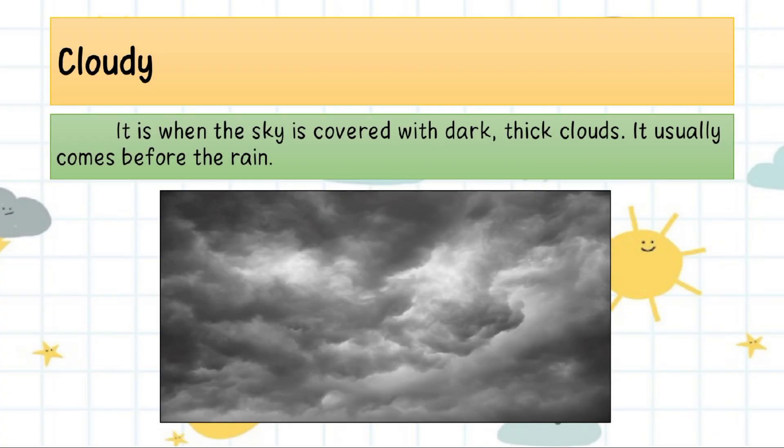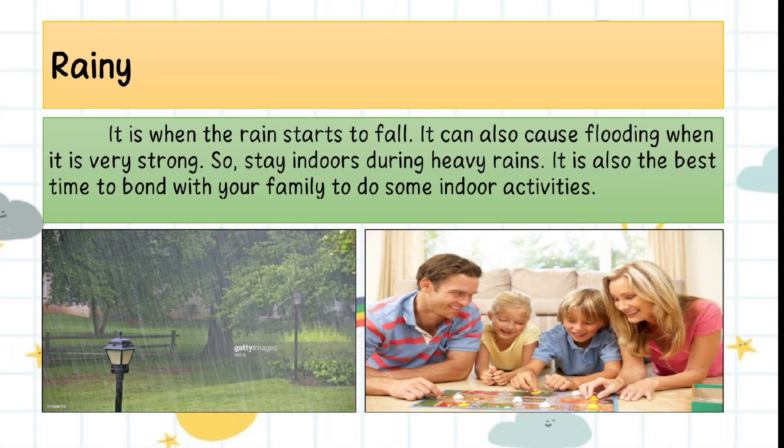Cloudy — it is when the sky is covered with dark thick clouds, and it usually comes before the rain. Rainy — it is when the rain starts to fall. It can also cause flooding when it is very strong, so stay indoors during heavy rains.